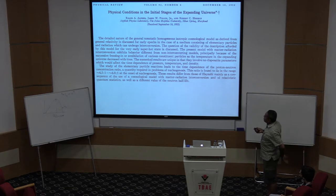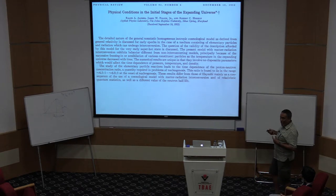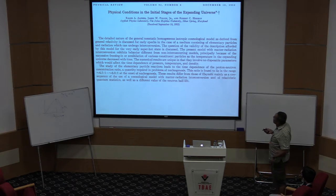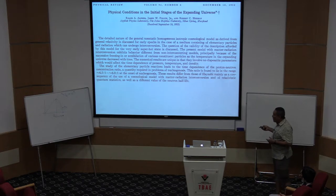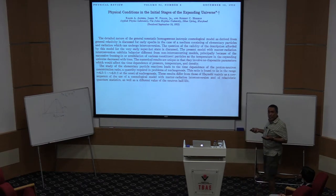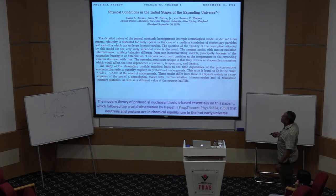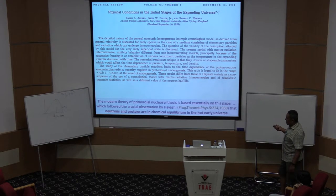The paper I referred to earlier — from 1953 — is one you must read if you want to understand the early universe. It spells out the framework of the hot big bang cosmology as we use it today. It was not fully up to date — at that time we didn't even know that the tau neutrino existed, so they work with two species of neutrino — but otherwise it's all there. The modern theory of nucleosynthesis is basically based on this paper.